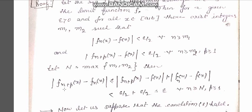Then the modulus of f_{n+p}(x) minus f_n(x) is less than or equal to the modulus of f_{n+p}(x) minus f(x) plus the modulus of f_n(x) minus f(x), by the triangle inequality. From the first and second conditions, the first modulus is less than epsilon over 2 and similarly the second is less than epsilon over 2.